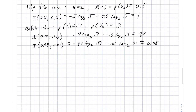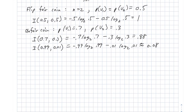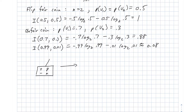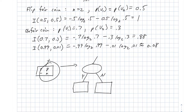Now let's look at what happens with a tree. I have some leaf node with some number of positives and some number of negatives. I'm going to imagine taking this node and introducing a question with a yes or no answer, sorting the total set of positives and negatives into two child leaves. The left branch gets p₁ positives and n₁ negatives; the right branch gets p₂ positives and n₂ negatives. So p = p₁ + p₂ and n = n₁ + n₂.